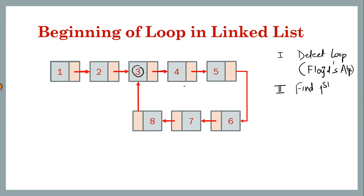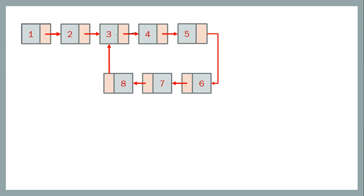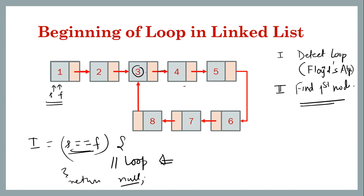The first part: take two pointers, slow and fast. If they meet somewhere — that is, slow becomes equal to fast at some point — then there is a loop. In the beginning they are the same, but we won't consider that case. When we encounter slow equal to fast, a loop is detected; if that situation never happens we return null. The trivial case where no loop is found is exactly like Floyd's algorithm — we just return null instead of false.